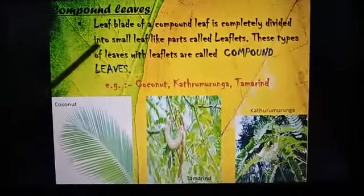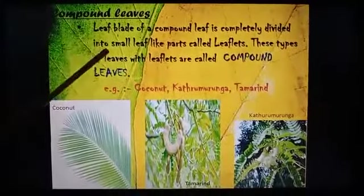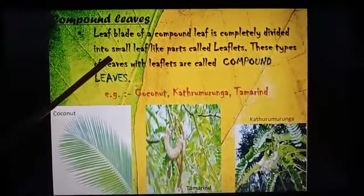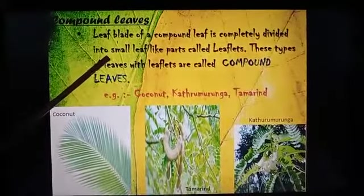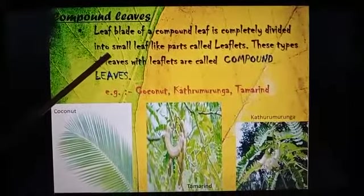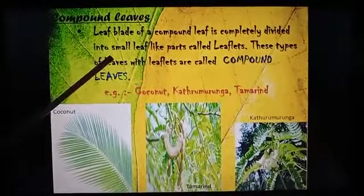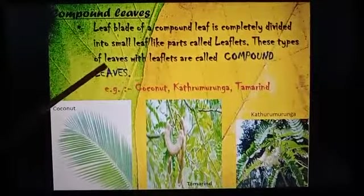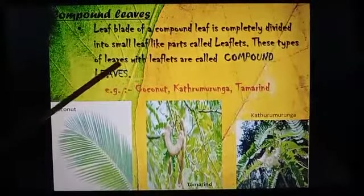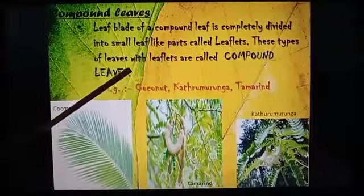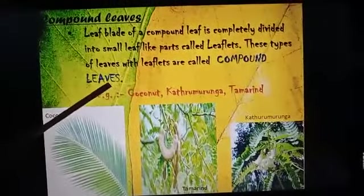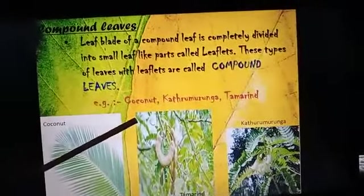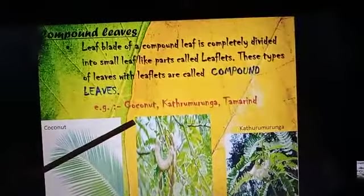Compound leaves: the blade of a compound leaf is completely divided into small leaf-like parts called leaflets. Leaves with leaflets are called compound leaves. Example: coconut, katramurunga, tamarind.